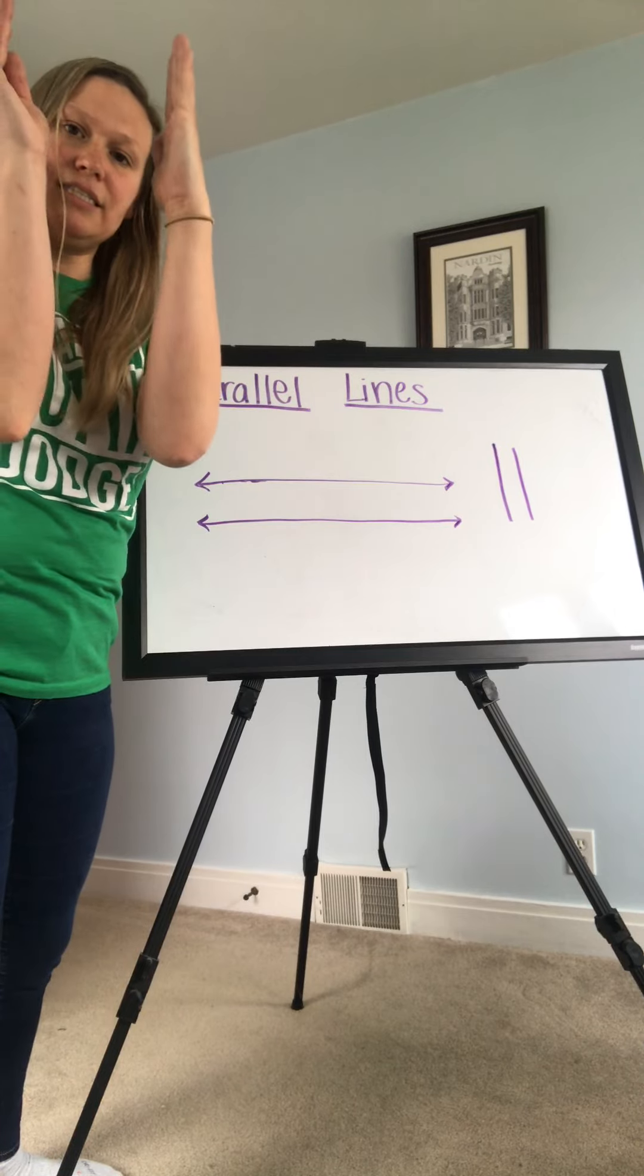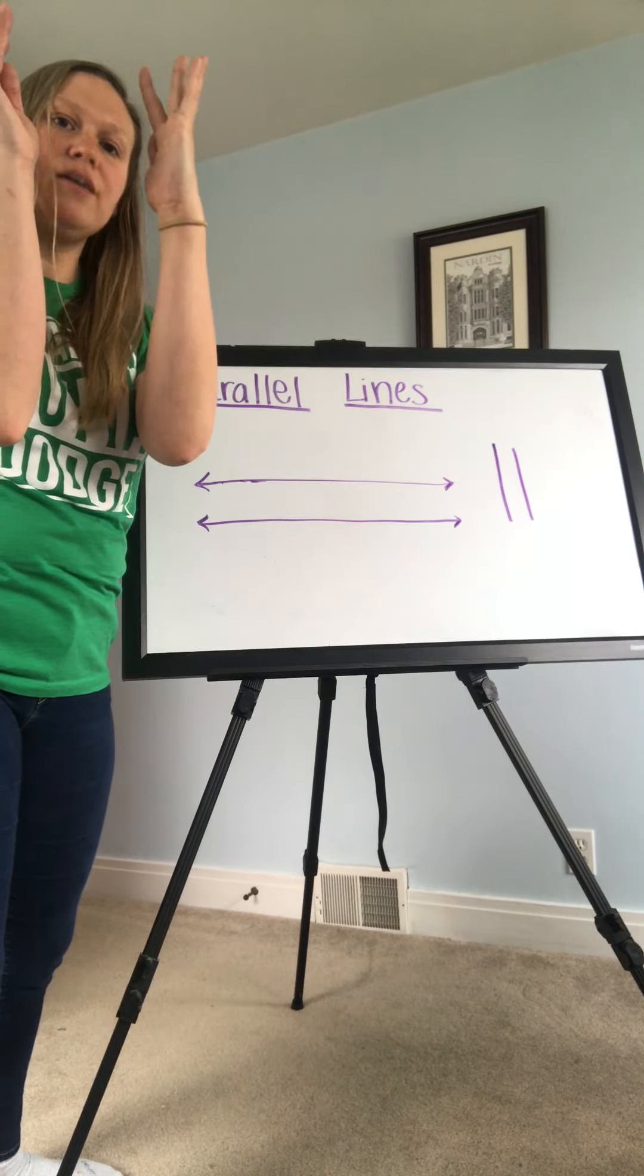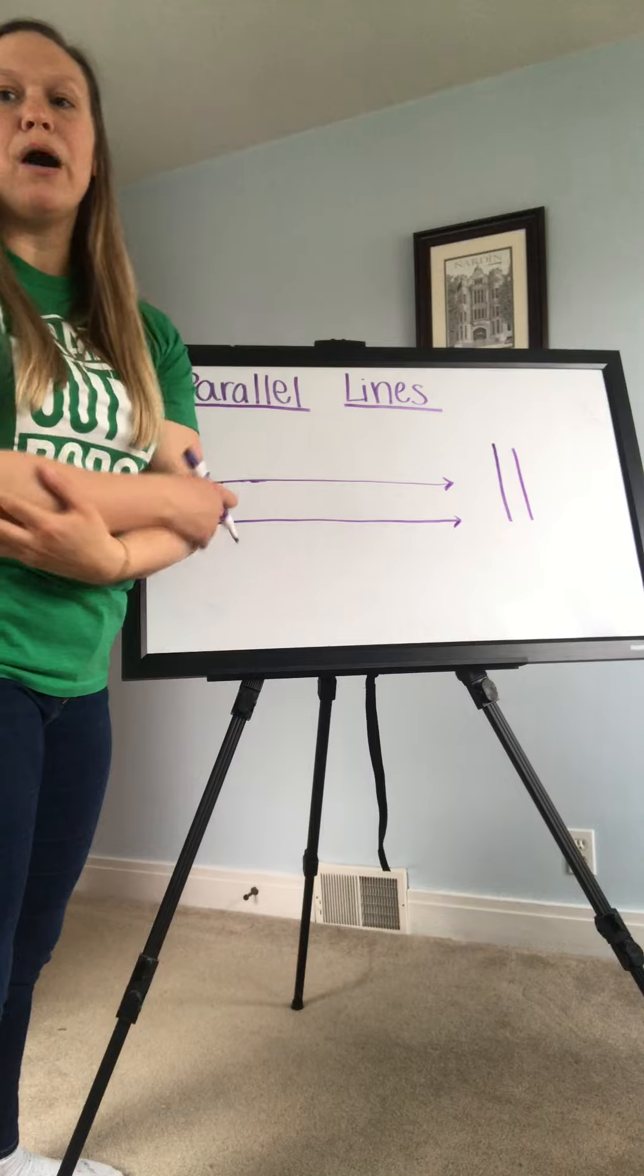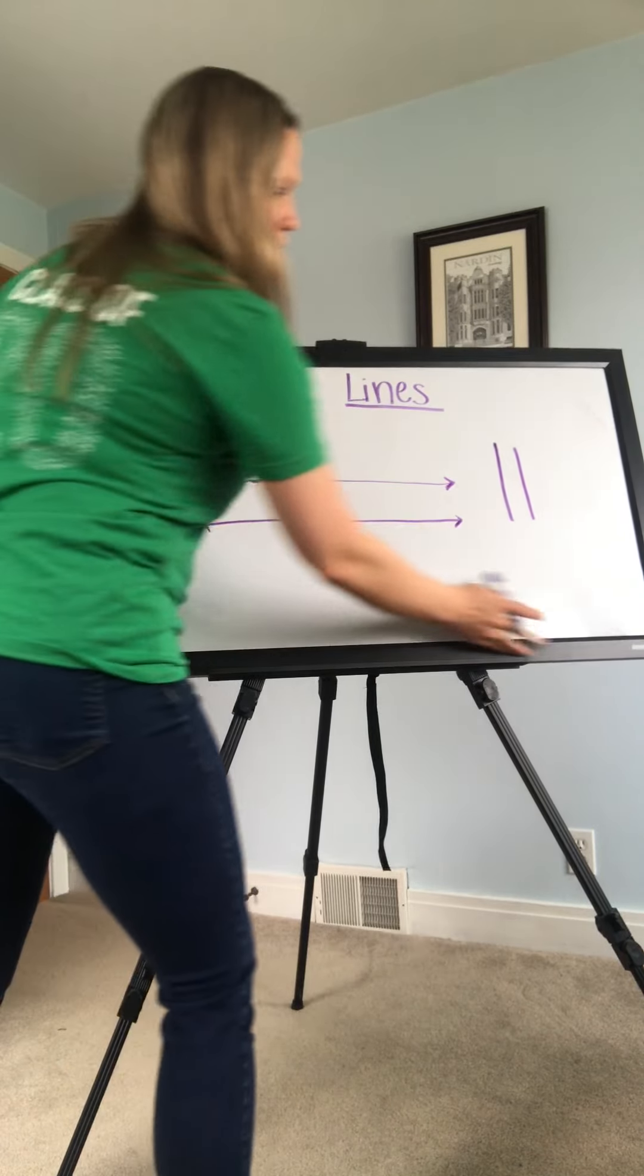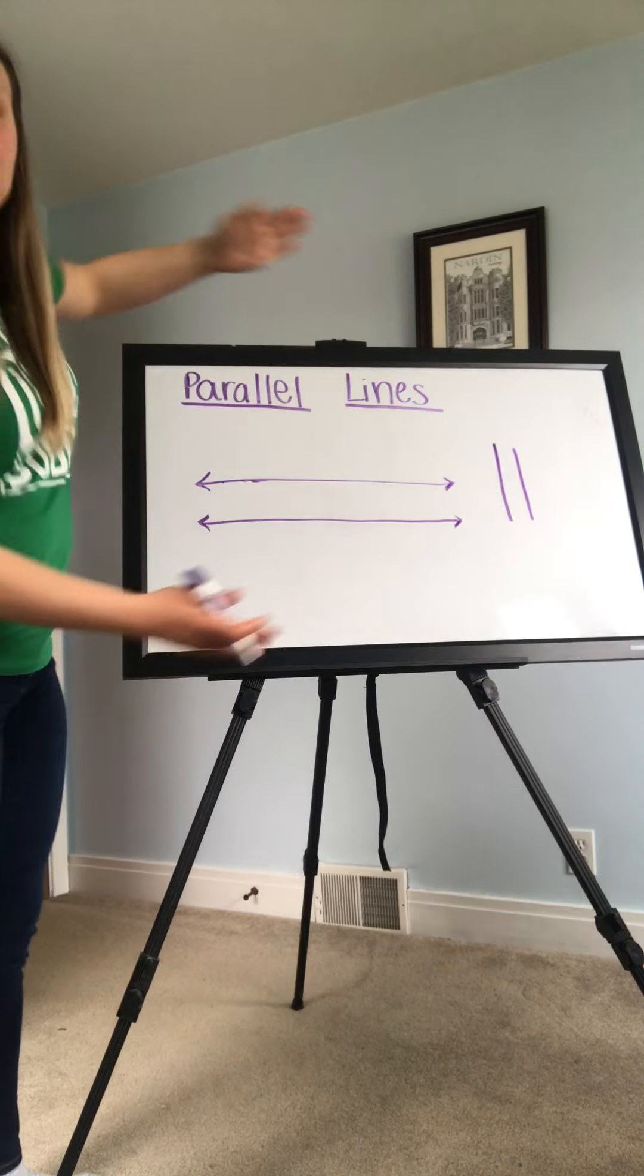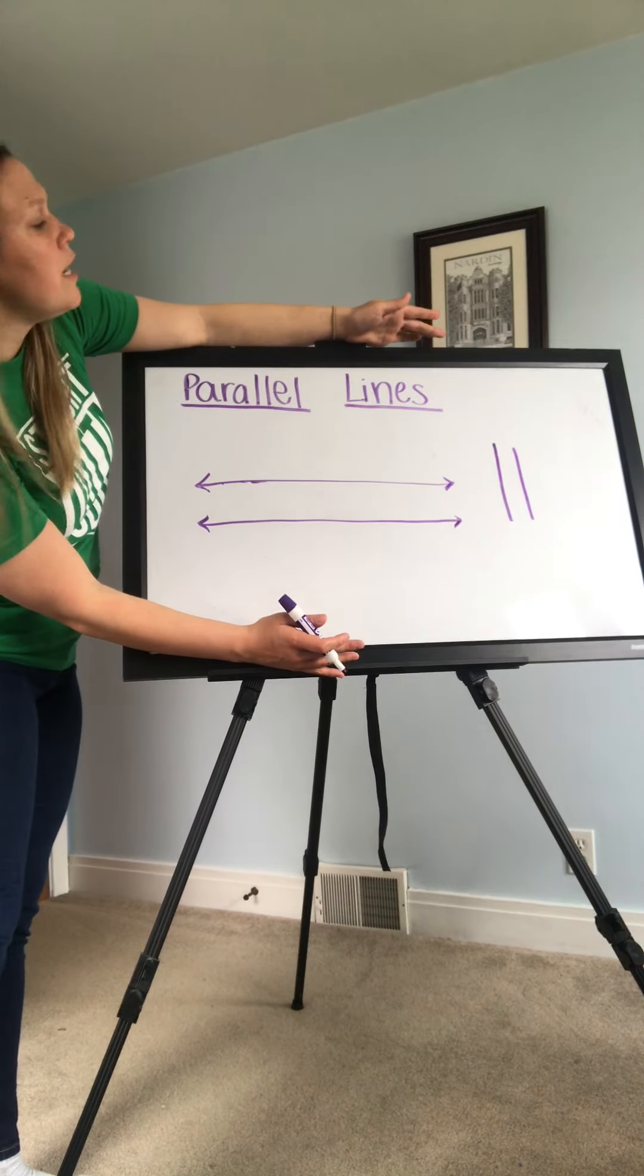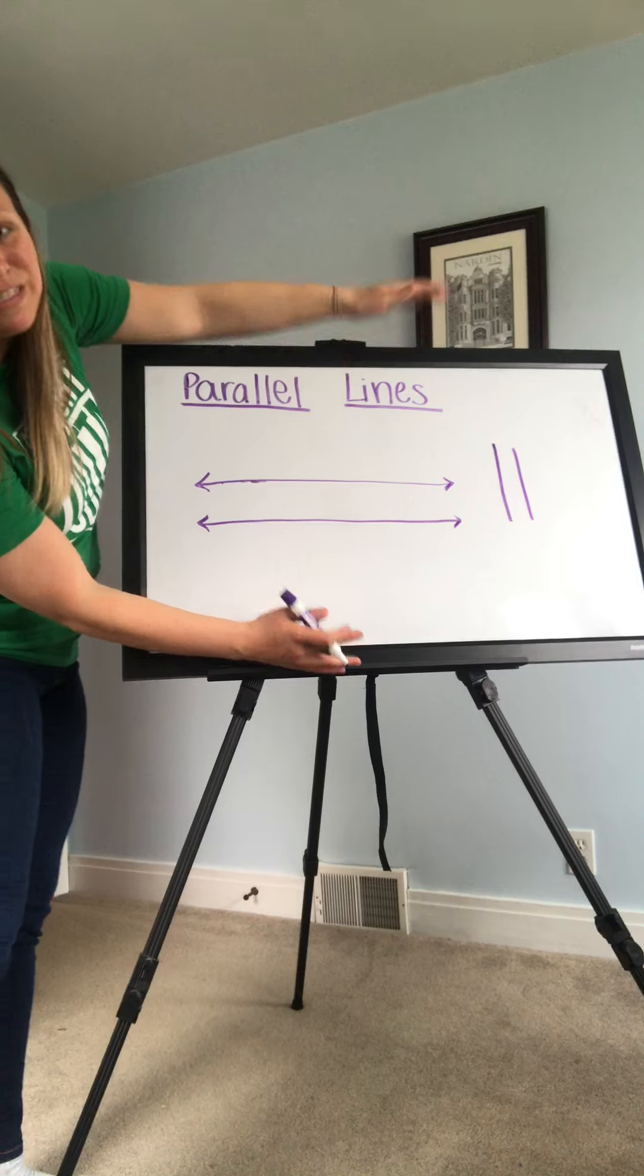So these parallel lines are going to stay away from each other and be the same distance apart. This is kind of like this and this. They're parallel to each other. They are never going to cross and they are always going to be the same distance apart.